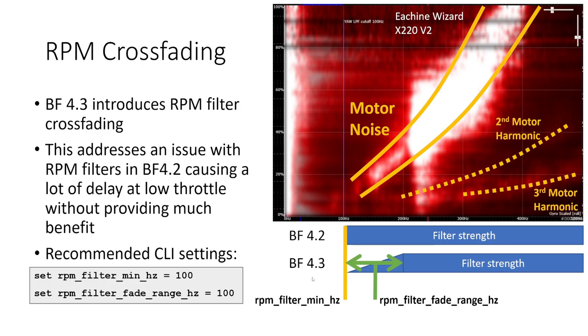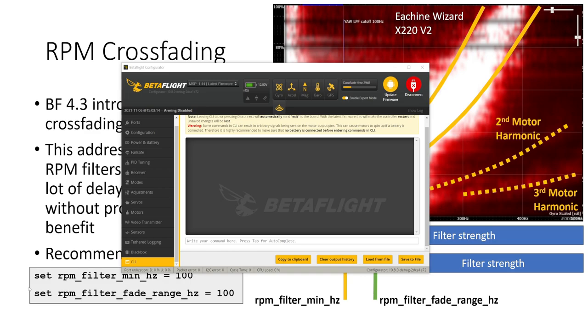Now you can select over what range this ramp up occurs but I would recommend that you set the RPM filter fade range to 100 hertz and what that means is we've set the minimum to 100 hertz so that's when the RPM filters start becoming active and then they will ramp up in strength reaching their full strength 100 hertz higher than the minimum which is 200 hertz in this case. To use this CLI command just go into the CLI in the Betaflight configurator and type set rpm_filter_fade_range_hz = 100 hit enter and then type save and hit enter.